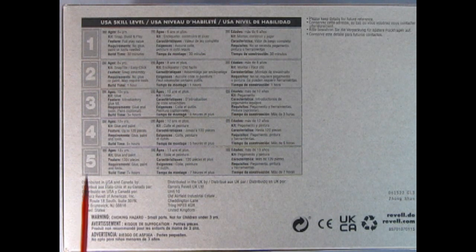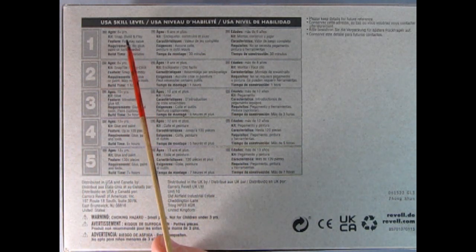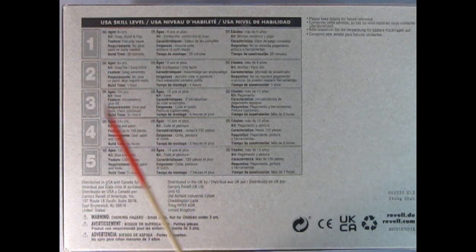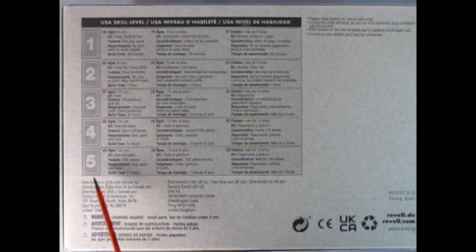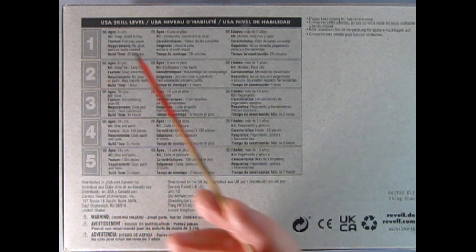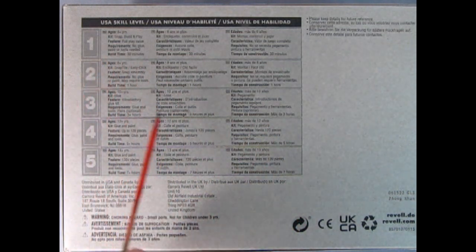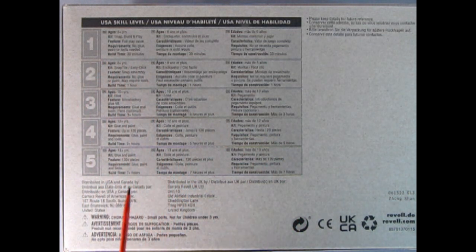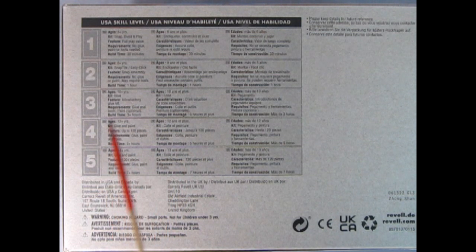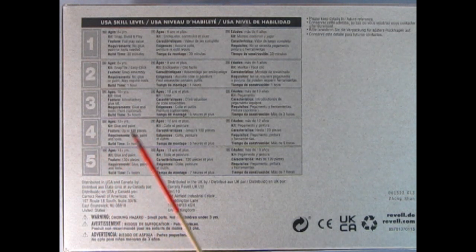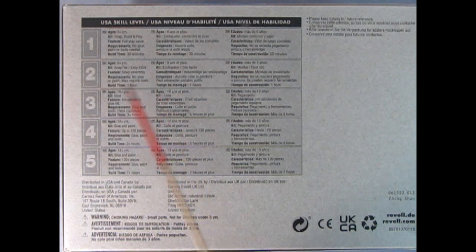Here we can see the engine and the front three-quarter and rear three-quarter of the stock variant. On the bottom of the box we get a skill level chart. Skill 1 is for ages 6 and up, skill 2 for 8 and up, skill 3 is 10 and up, skill 4 is 12 and up, and skill 5 is 13 years. The five skill levels are more of a Revell Germany thing than an American thing. This kit is a skill 4 which is basically an American skill rating of two and a half.